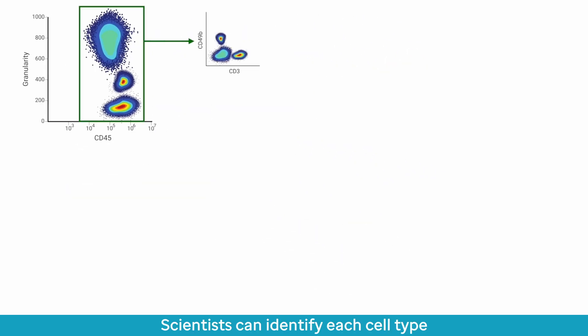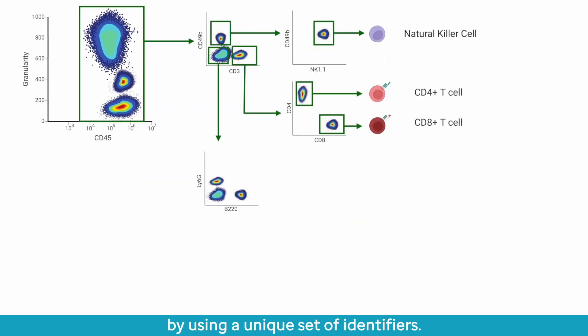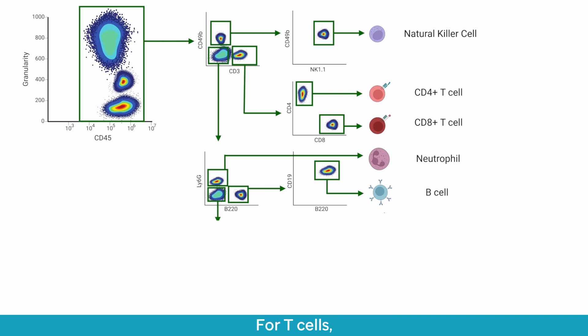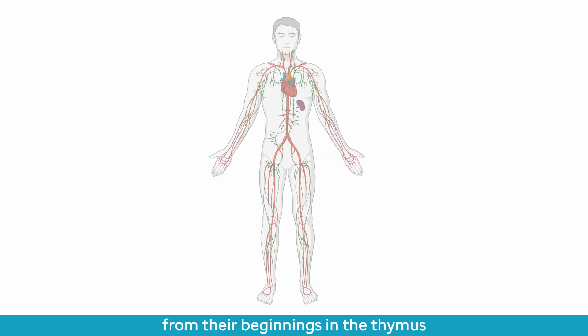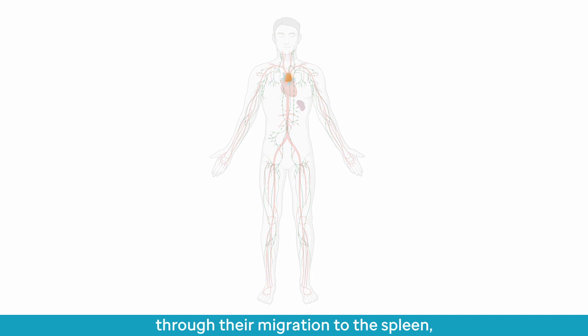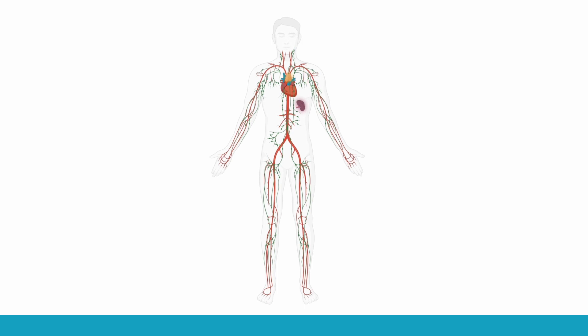Scientists can identify each cell type by using a unique set of identifiers. For T cells, we can follow the entire developmental path from their beginnings in the thymus, through their migration to the spleen, the lymphoid organs, and peripheral blood using this set of surface protein markers.